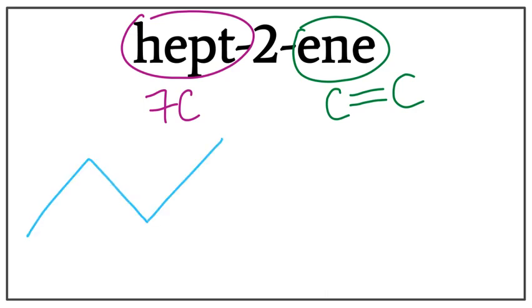One, two, three, four, five, six. First carbon, second carbon, fourth carbon, fifth, sixth, and the seventh carbon.